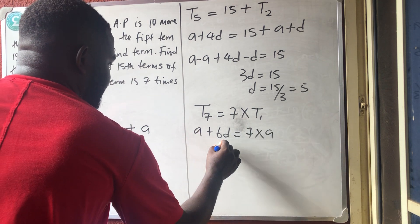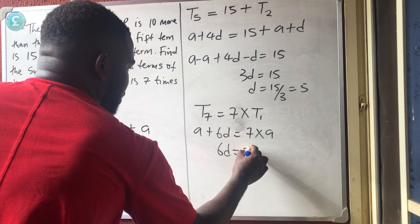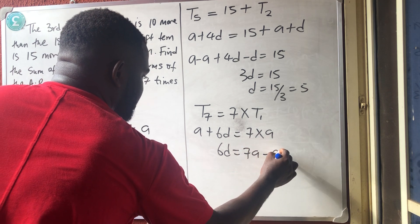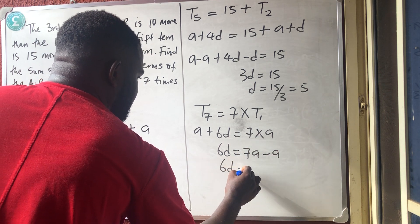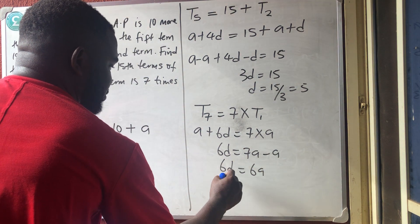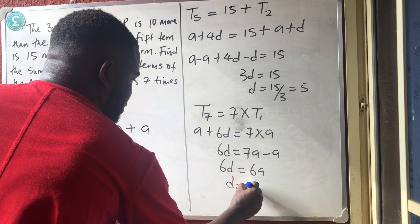What I have now? That 6D is equal to 7A minus A. So, 6D is equal to 6A. So, if 6 is canceled, I'm having that D is equal to A.